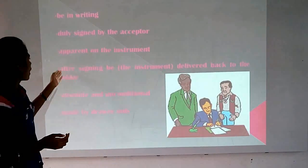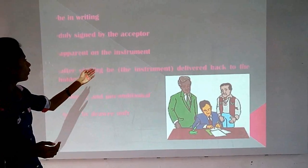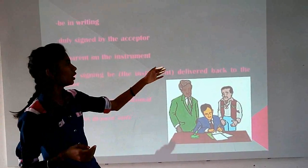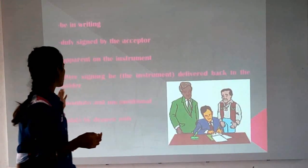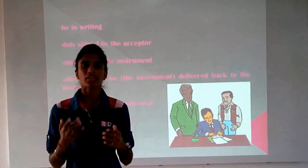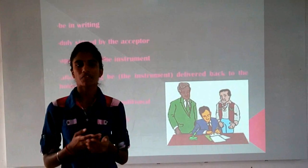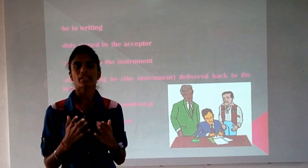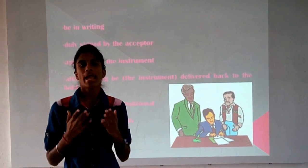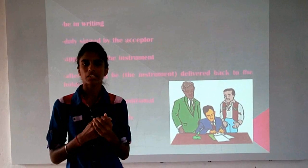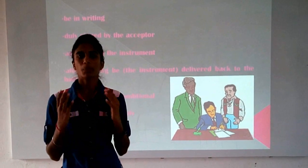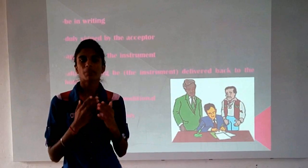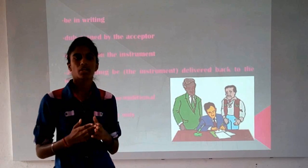Acceptance must be made on the face or back of the instrument either by writing the words 'accepted' followed by the acceptor's signature or by merely signing. Fourth, after signing, the instrument must be delivered back to the holder. It means the acceptor, after giving their assent to pay the amount as mentioned in the bill, must give the instrument back to the drawer.